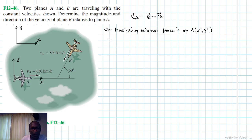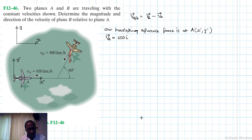We know that VA is equal to 650i. Then VB will have two components.